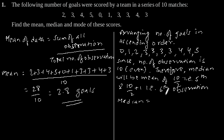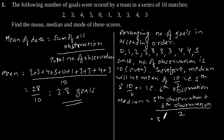Median is equal to 5th observation plus 6th observation divided by 2. The 5th observation is 3 and 6th is also 3, so 3 plus 3 divided by 2 gives 6 divided by 2, which gives median as 3.